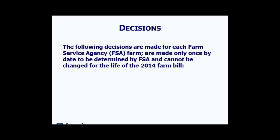One of the main features of this Farm Bill is that farms and landowners will be required to make a series of choices. These decisions will be made for each Farm Service Agency farm, made only once, by a date determined by FSA, and they are irrevocable — they cannot be changed during the life of this Farm Bill.